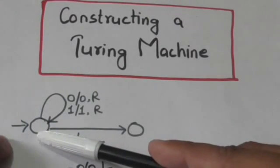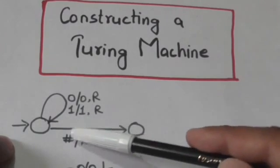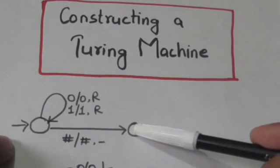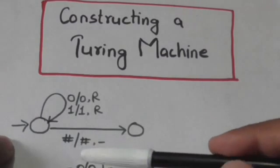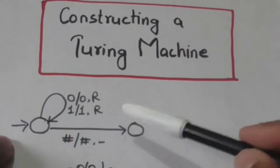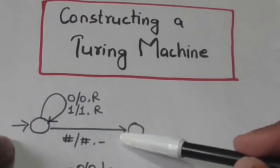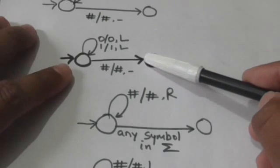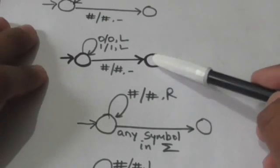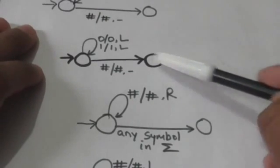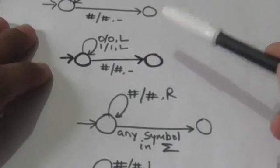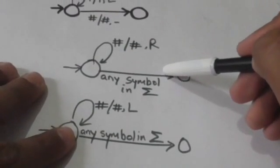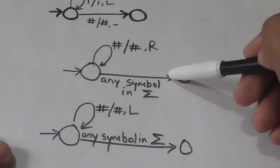But when it reads a blank symbol, it jumps to some other state. So this type of Turing machine finds the first blank symbol to the right of the current head position. Similarly, this Turing machine finds the first blank symbol to the left of the current head position.